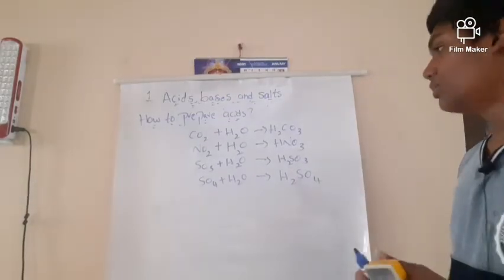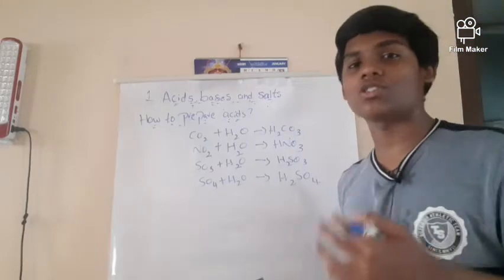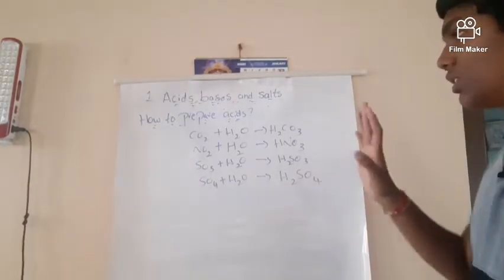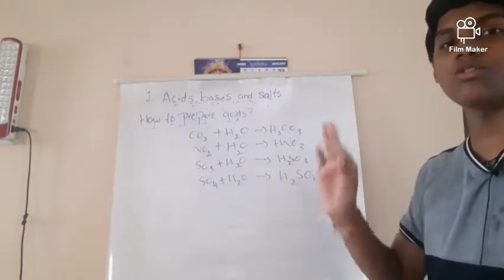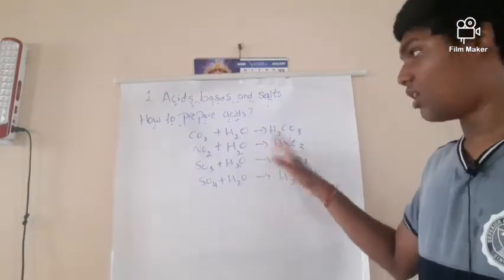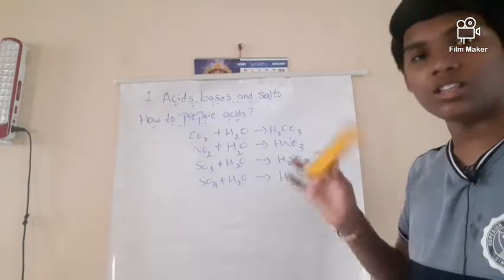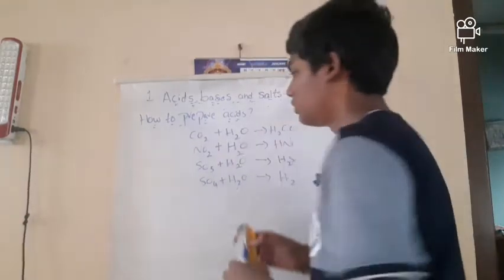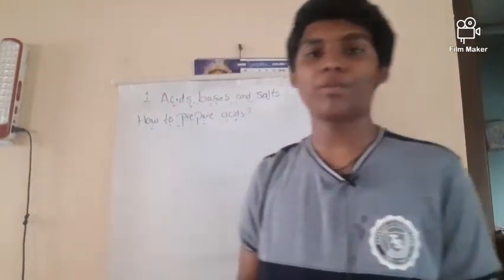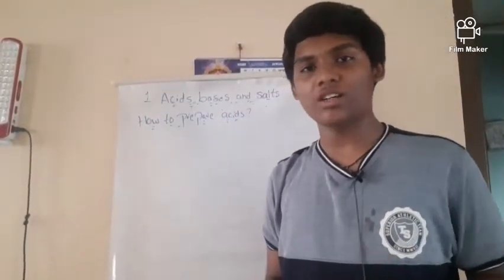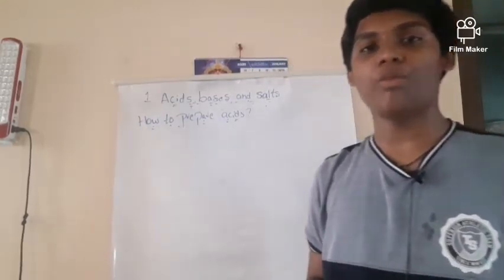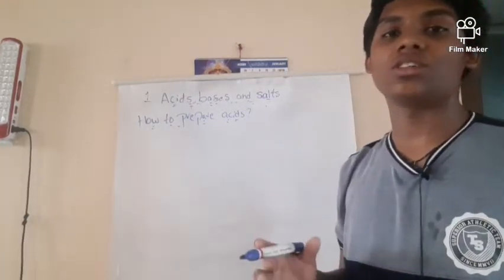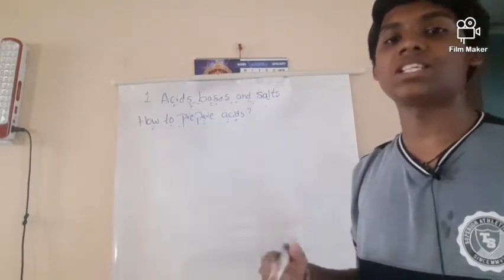Now let us discuss some more preparations of acids — direct methods. Please note down these equations. Non-metal oxides dissolving in water to form acids fall under the first category. Direct method means when two gases or two elements or compounds directly react to form an acid. For example, hydrogen reacts with chlorine gas to form HCl.